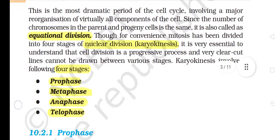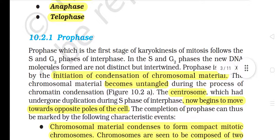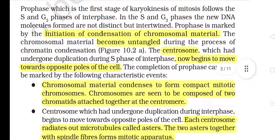Karyokinesis involves the following four stages: prophase, metaphase, anaphase, and telophase. 10.2.1 Prophase. Prophase, which is the first stage of karyokinesis of mitosis, follows the S and G2 phases of interphase. In the S and G2 phases, the new DNA molecules formed are not distinct but intertwined. Prophase is marked by the initiation of condensation of chromosomal material. The chromosomal material becomes untangled during the process of chromatin condensation.